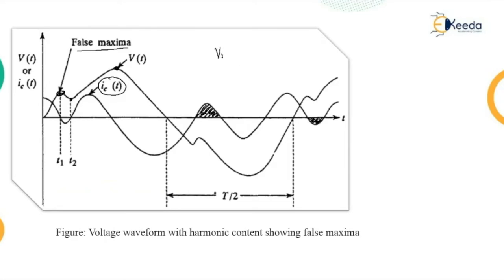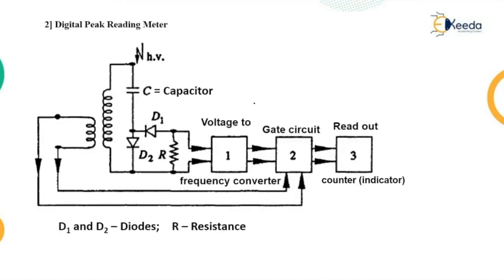We need the value of VM which is proportional to the current measured by the DC ammeter. That is all with the understanding of the peak reading voltmeter, first method called as the series capacitor peak voltmeter. Due to these disadvantages, we have another method called the digital peak reading meter.